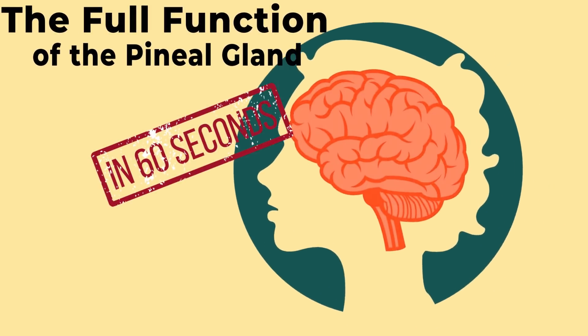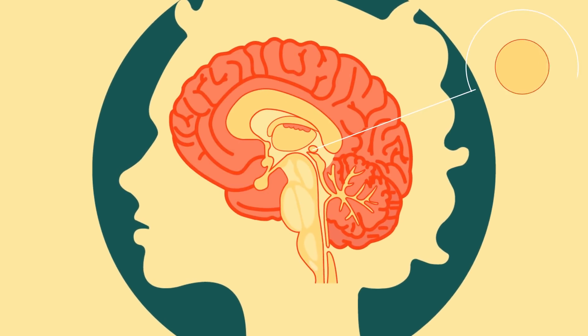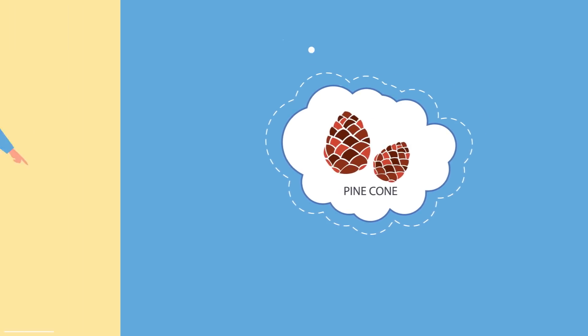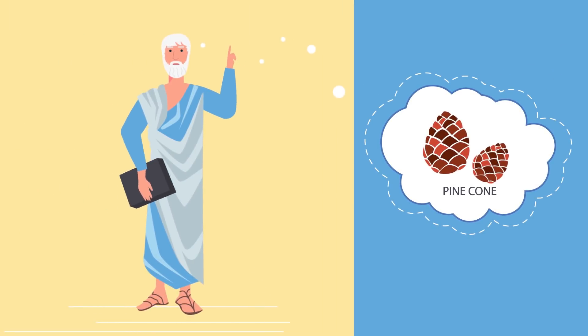The pineal gland was one of the last parts of the human brain to be understood by neuroscientists. With the Latin word pinea, which means pine cone, it was first described by the Greek philosopher Gallen as glandular pinealis.